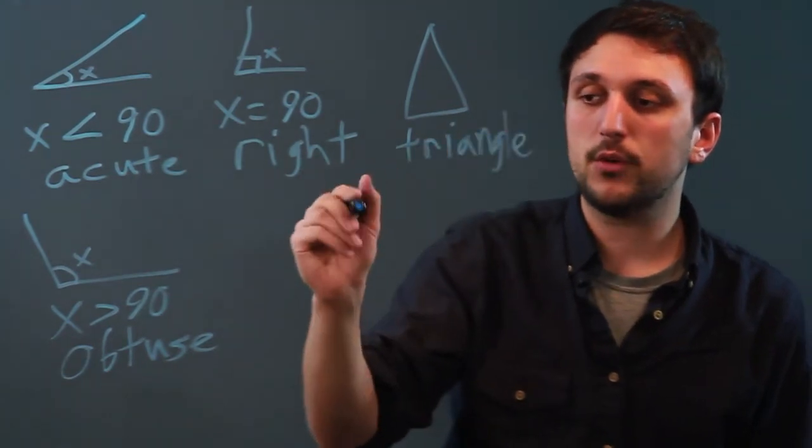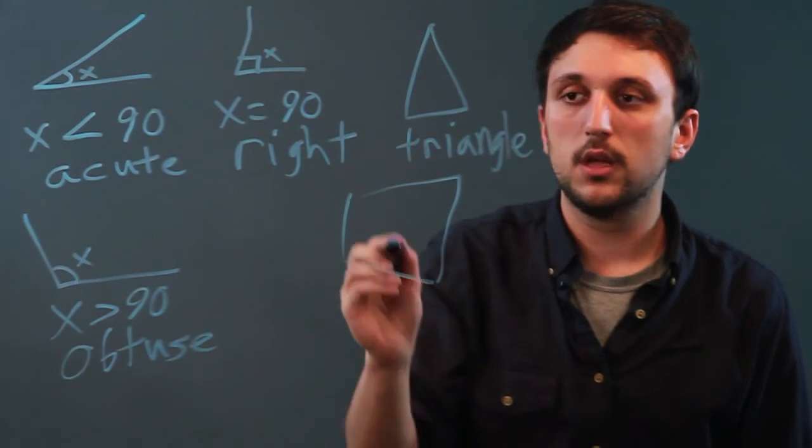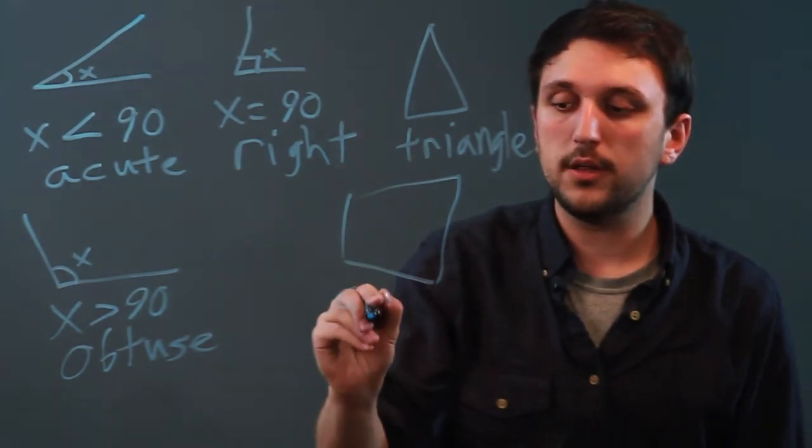Any four-sided figure, just a random one like this, that's closed is called a quadrilateral.